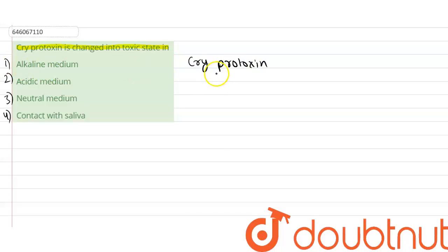Whenever we find the word 'pro,' it means an inactivated form—an inactive form of which cry protein, of cry toxin.